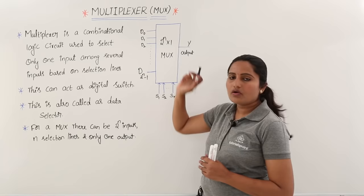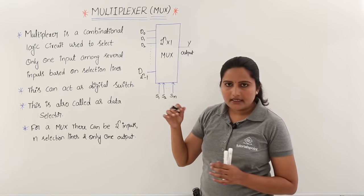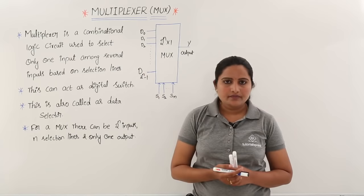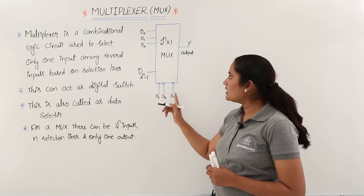In general, this is called a 2-power-n to 1 MUX. The value of n must be at least 1, meaning at least one selection line must exist. If n equals 1, it becomes a 2:1 MUX — you have 2 inputs, 1 selection line, and only one output in all cases.